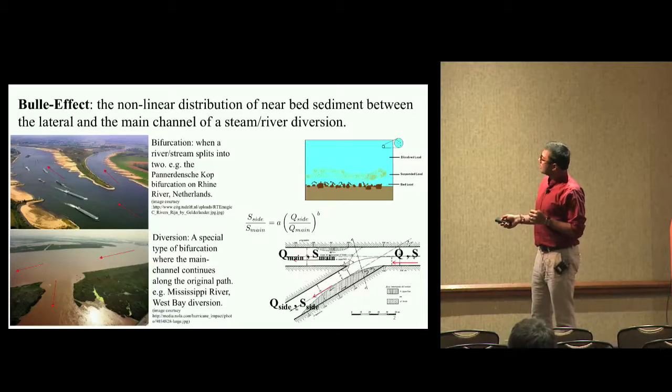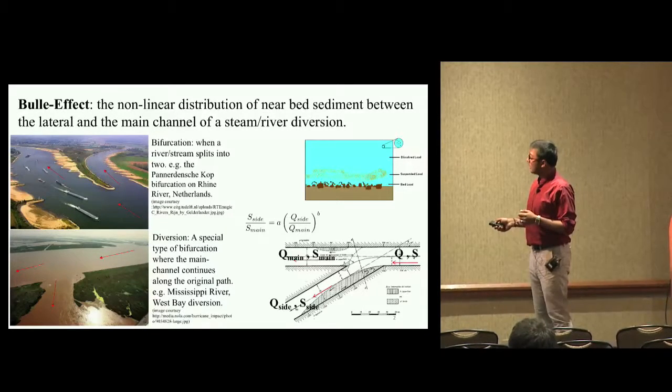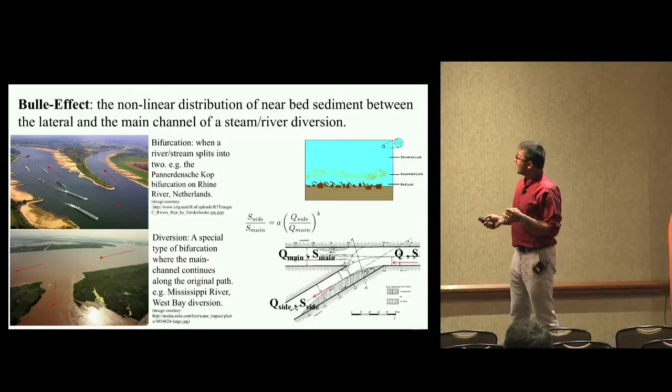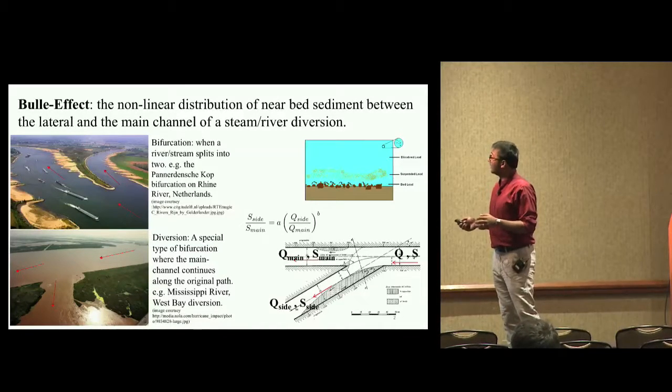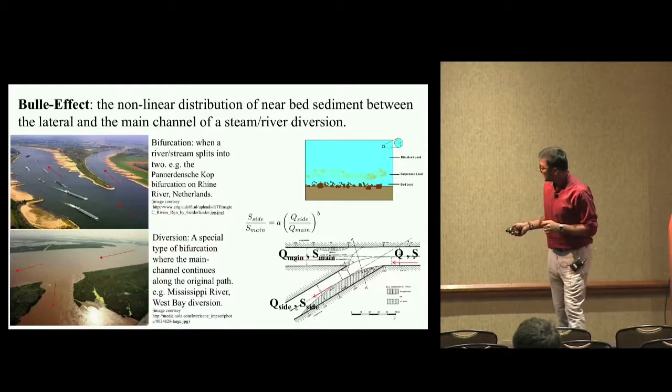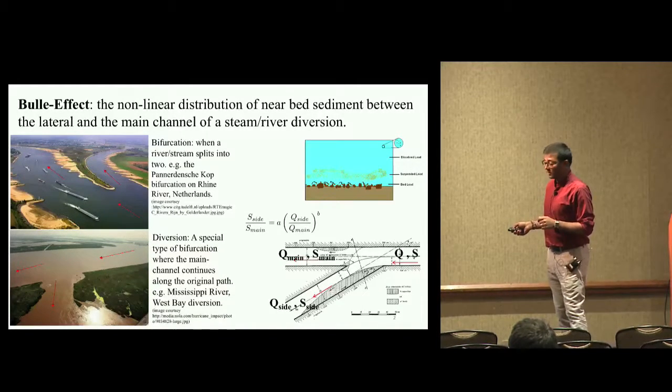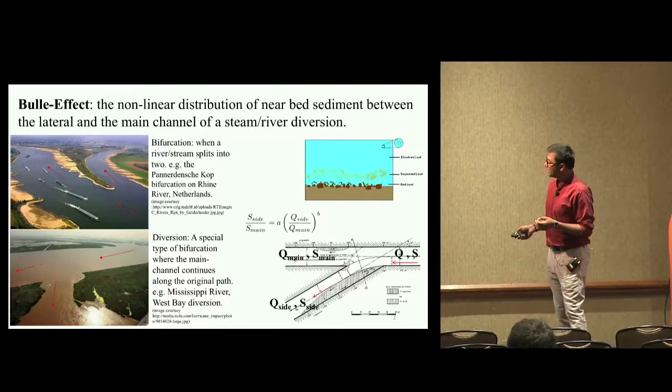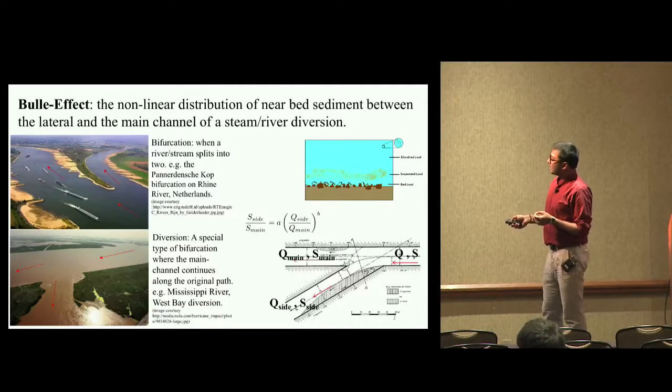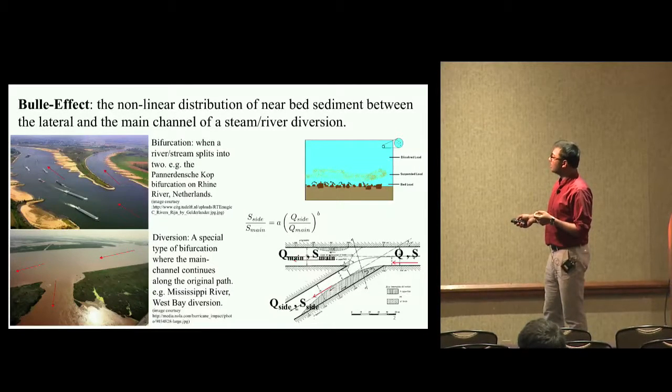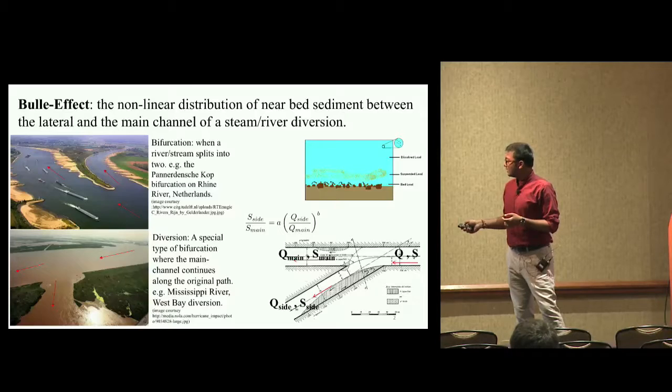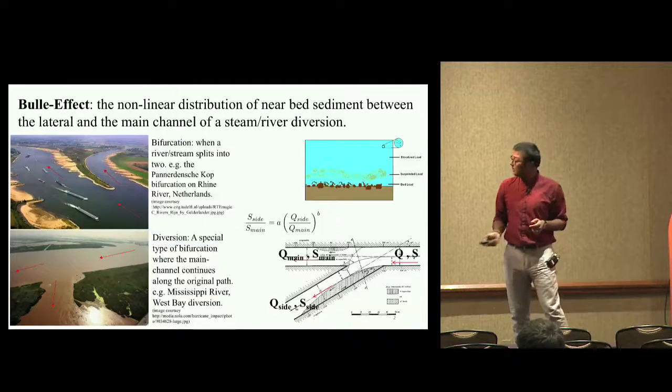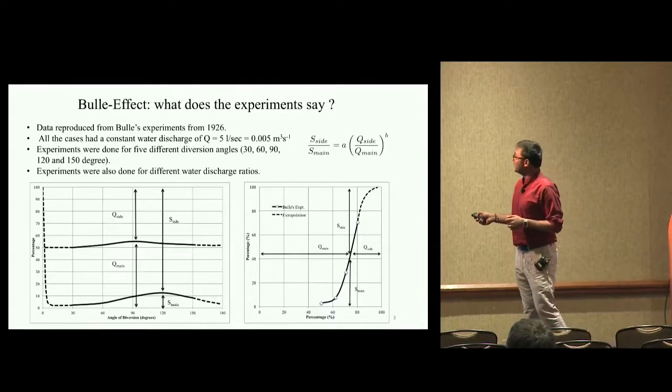The phenomena I'm going to discuss today is called Bulle effect, which means non-linear distribution of near bed sediment between lateral and the main channel of a stream river diversion. If we have a channel with discharge Q and sediment discharge S splitting into Q main and Q side, you expect S side by S main equals Q side by Q main to the power B. You may expect that B is 1 for linear distribution, but experiments have found that B is not 1.